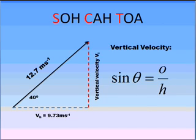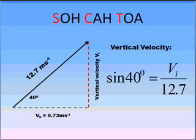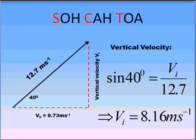Summing in numbers, we have sine of 40 degrees being equal to the vertical velocity divided by 12.7. We now rearrange and solve, and we get a final solution of the initial velocity, which is the vertical velocity, being 8.16 ms to 3 significant figures.